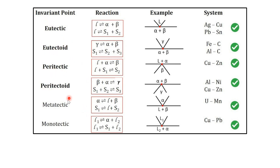There are different types of invariant reactions in binary systems: eutectic, eutectoid, peritectic, peritectoid, monotectic, metatectic, and so on. Eutectic means liquid reversibly transforms into α + β. Eutectoid means γ becomes α + β, or α + β becomes γ. Note that whenever '-oid' is present in the name, the reaction involves only solid phases — α, β, γ are all solids. Eutectic reactions are found in silver-copper and lead-tin phase diagrams; eutectoid reactions in iron-carbon and aluminium-carbon.